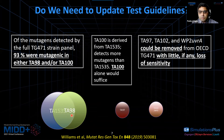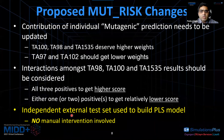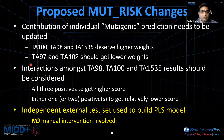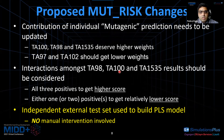We decided to update our existing MuteRisk by incorporating these findings. We are focusing on giving TA100, TA98, and TA1535 higher weights, while TA97 and TA102 are given lower weights. Secondly, we take into consideration the interactions among TA98, TA100, and TA1535: if all of them are positive, they should receive a slightly higher score; if only one or two are positive, they get a relatively lower score.